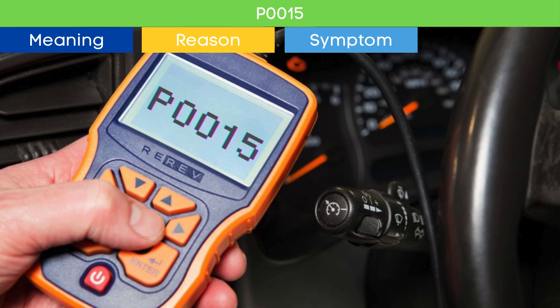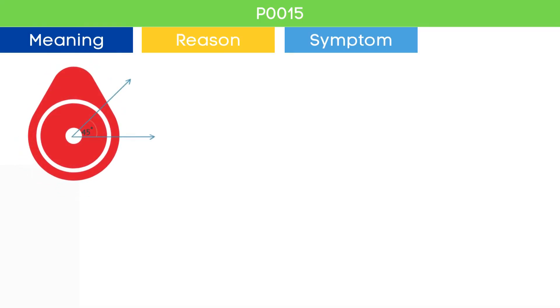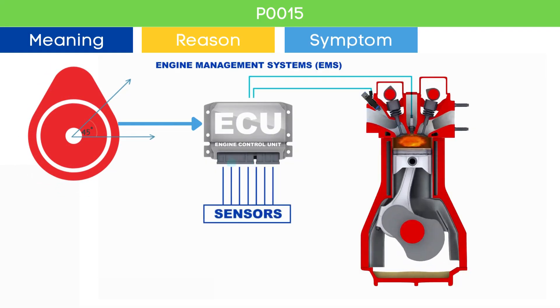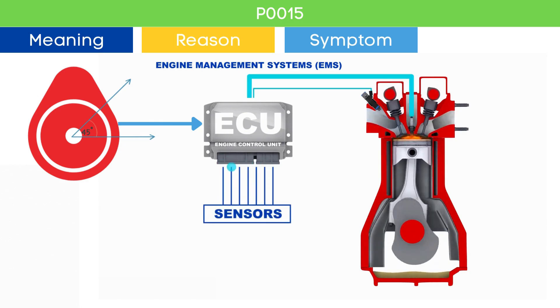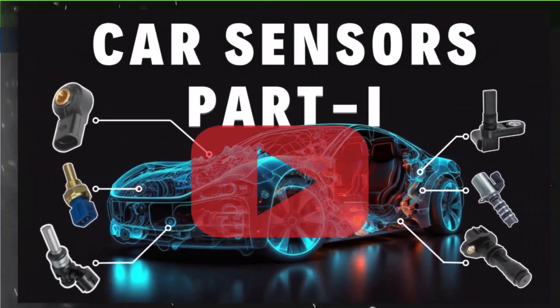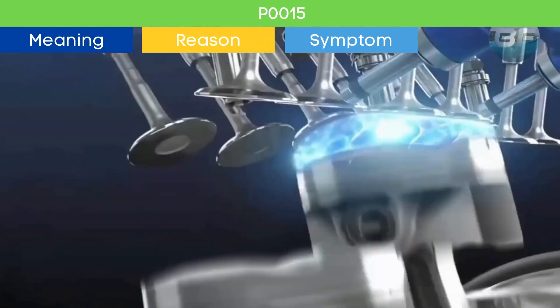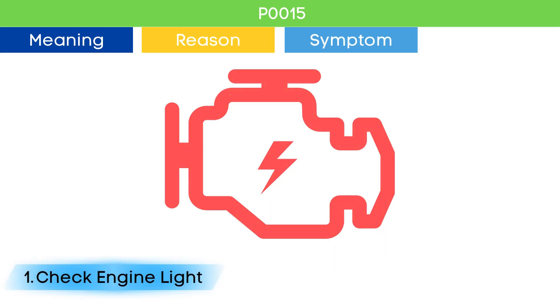Now that we know what the P0015 OBD-II code means, let's dive into the symptoms of P0015. Cam angle is a very crucial parameter in engine management systems to optimize the engine's performance. The check engine light comes on if there are any active trouble codes related to the engine management system.